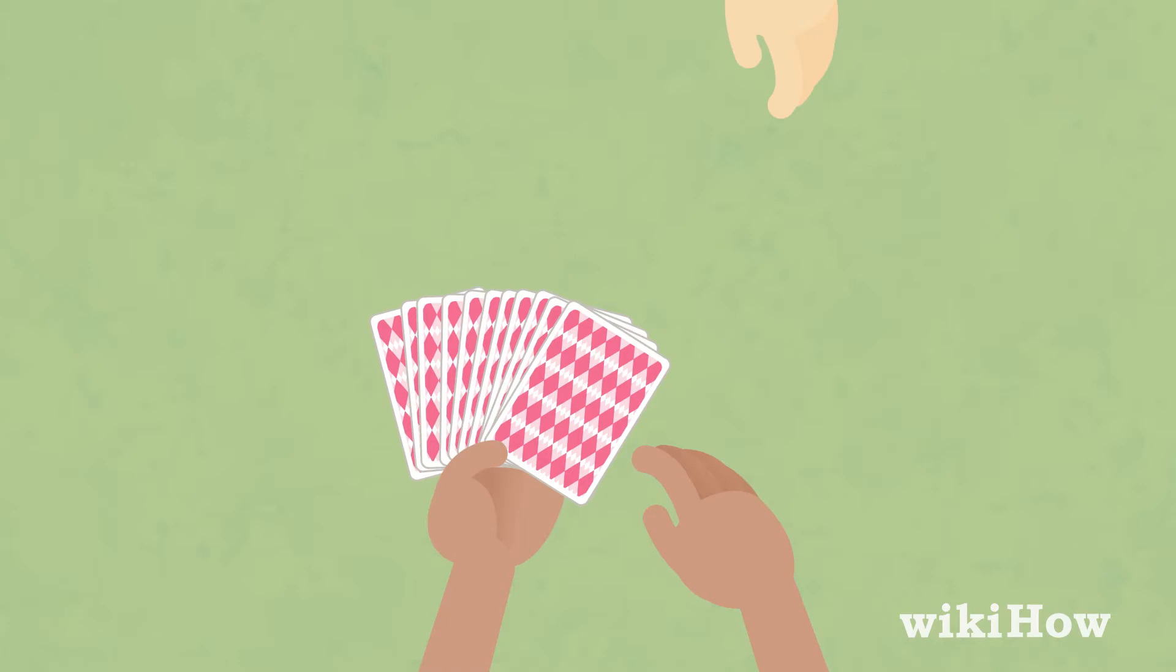Note which half of the deck they pull the card from to determine whether their card is red or black. Then, ask them to return the card and put it in the bottom half of the deck if they chose a red card, or the top half of the deck if they picked a black card.